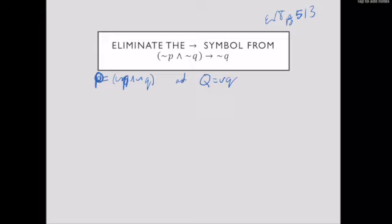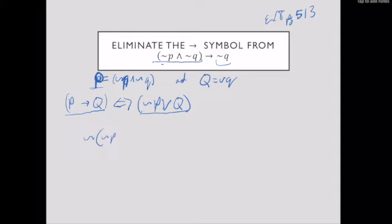Our implication rule for logical equivalence is that P implies Q is logically equivalent to not P or Q. So I can rewrite this. I have not P or Q implies not Q, and that's going to be not P or Q. So now I have not whatever my P was, which is not P and not Q, or Q which is not Q.